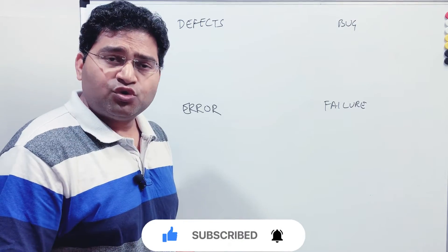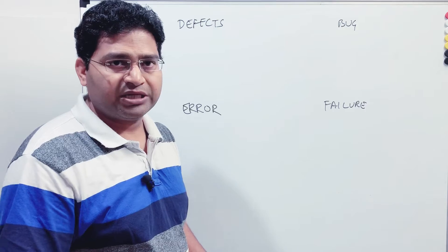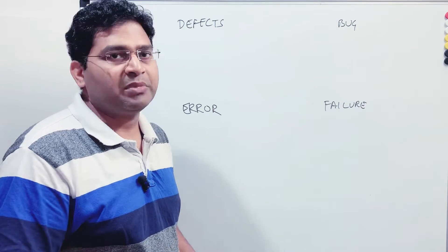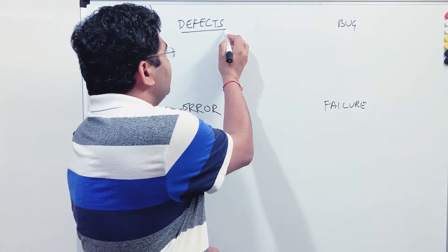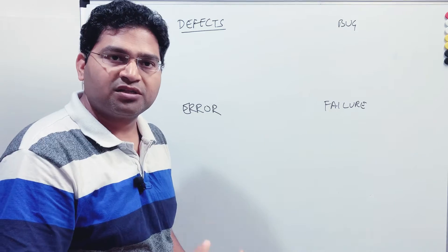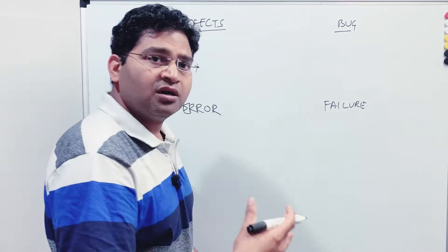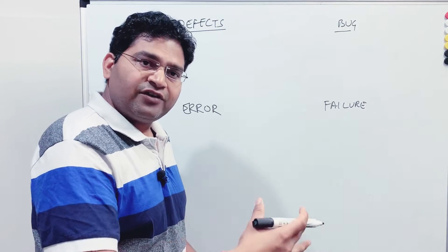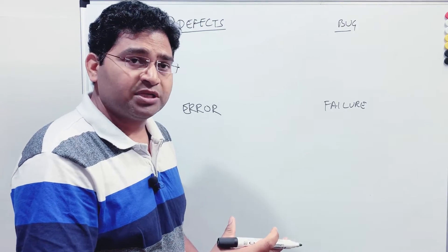In terms of interviews, it is important to know the difference and be able to explain it, but actually in real projects it won't matter much. When we talk about defects, a defect is any deviation from the expected result — and the same thing applies to a bug. That is why they are used interchangeably.